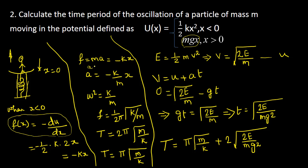Acceleration = −ω²x is the general SHM equation. Comparing, ω² = k/m. So the angular frequency ω = √(k/m). Since ω = 2πf, the frequency f = (1/2π)√(k/m). Therefore the time period T = 2π√(m/k) for the spring side.